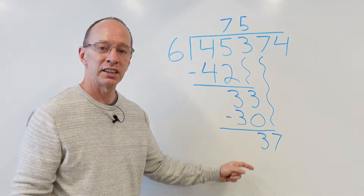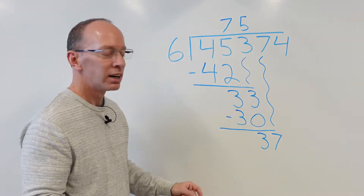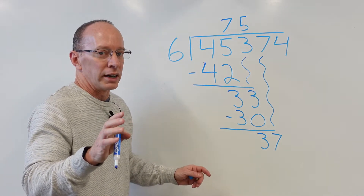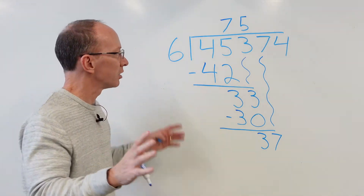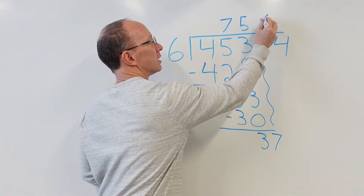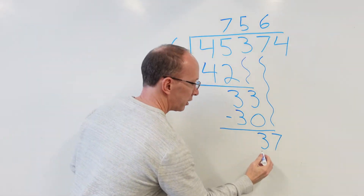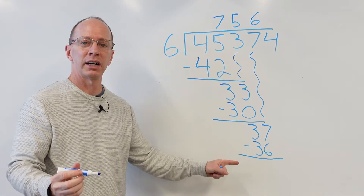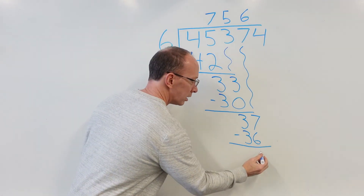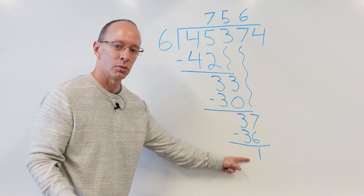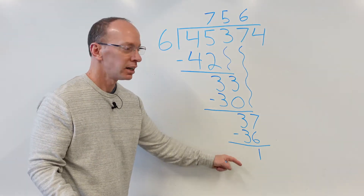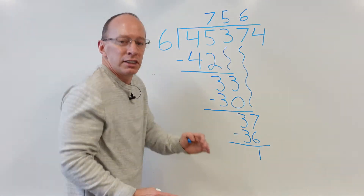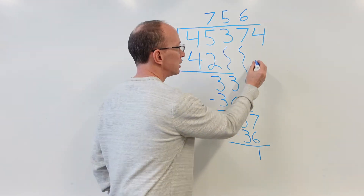Now, can we put 6 into 37? Sure you can. How many times? 6 times 6 is 36. 6 times 7 is 42 — no. Stick with 6 times 6. So I put the 6 up here. 6 times 6 is 36. Put the line here — subtraction line. 7 minus 6 is 1. Can't put 6 into 1. I always like to check. Now I bring this 4 down — bring it down, bring it down, bring the 4 all the way down here.